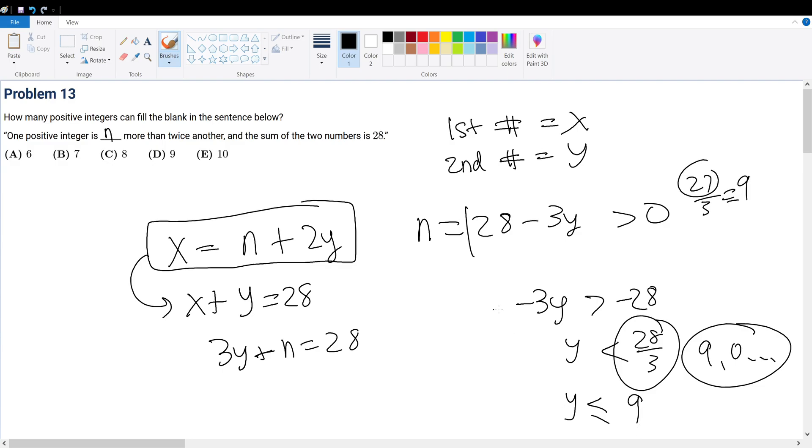Because if you plug it back in, 28 minus 27 that's equal to 1. What about 28 minus 30? Wait a minute, that's negative 2. That doesn't make sense—that's 2 less, not 2 more. So y's max has to be 9.